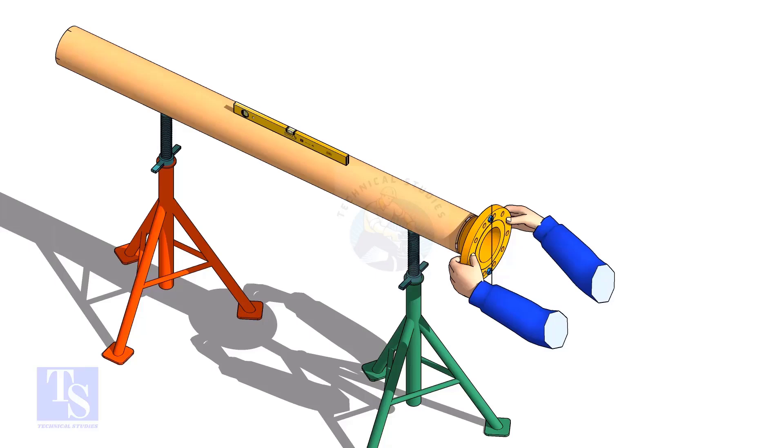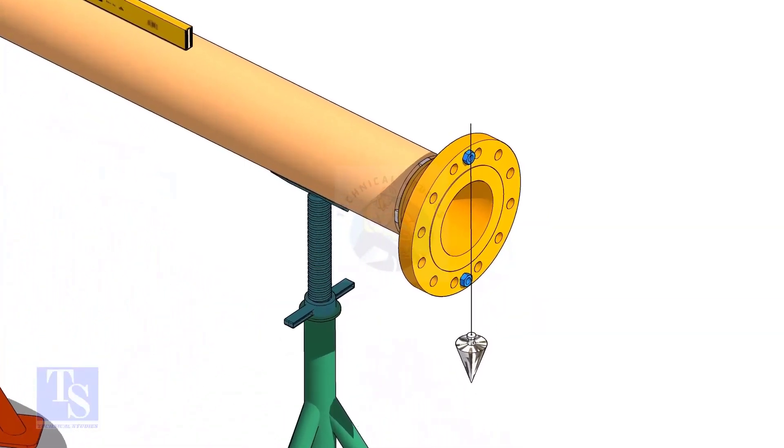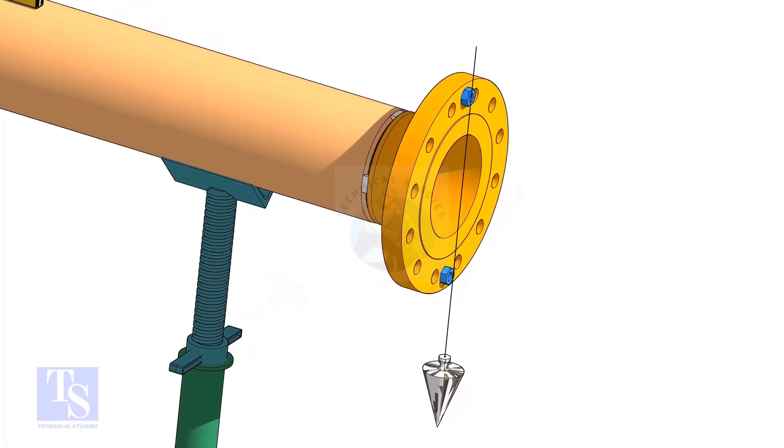In this method, let us learn how to fit up a flange with a pipe using a plumb. Level the pipe, put a plumb through the center of the flange on a nut.